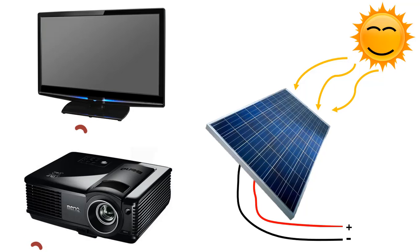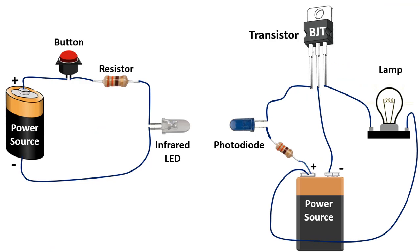In our video where we explained the working principle of the transistor, we built two circuits using infrared LED and photodiode. We can look at this example again to understand the usage logic of the two. There is a simple control circuit on the left and a simple receiver circuit on the right.